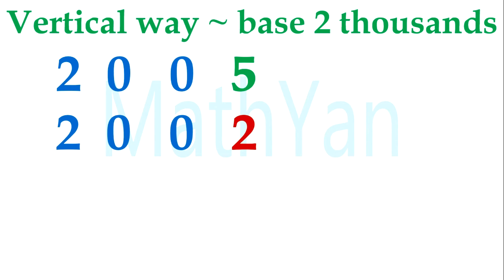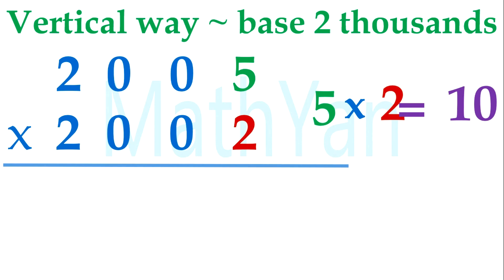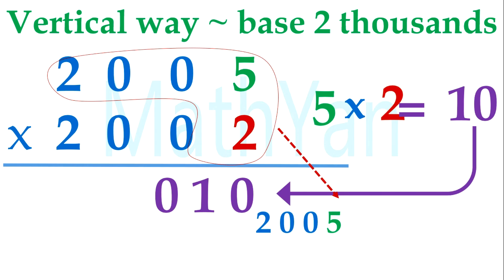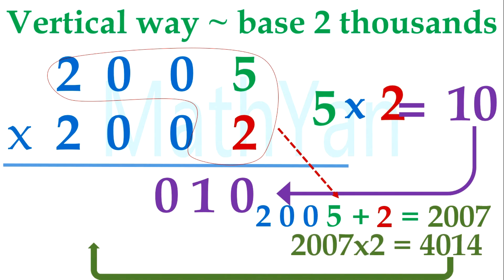How about this? 2005 times 2002. Same: 5 times 2 is 10. 3 digits, you need to add 1 digit in front, so become 010. Second part is same: 2005 plus 2 is 2007. 2007 times 2 is 4014. So then it becomes 4014010.